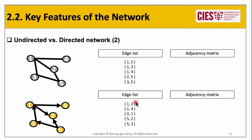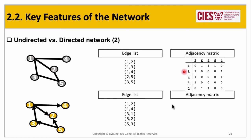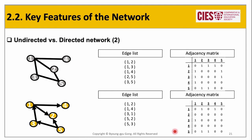Let's check the answers for the adjacency matrix. For the undirected network, the adjacency matrix is symmetric, because the pair of vertices does not represent directionality. For the directed network, the adjacency matrix is not symmetric, because a pair of vertices does represent directionality.